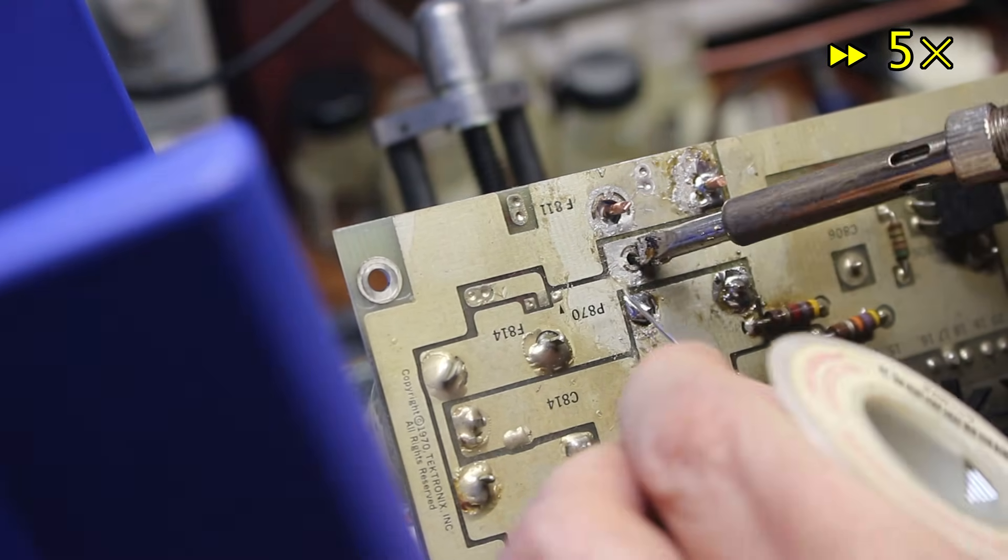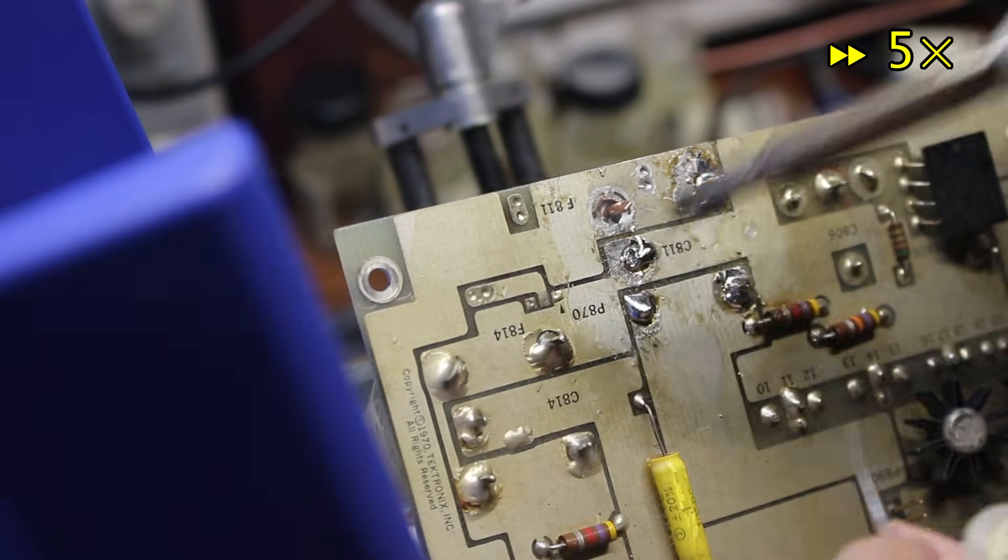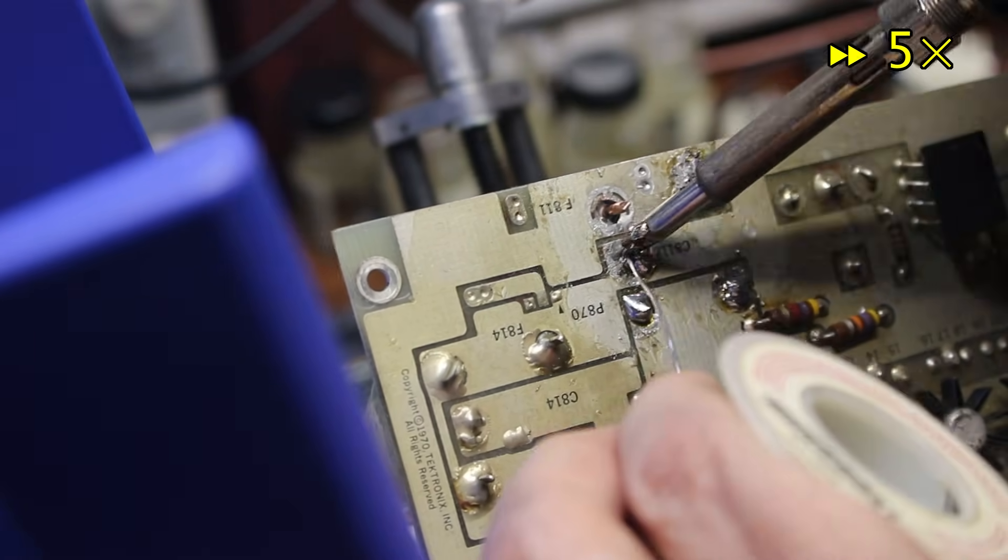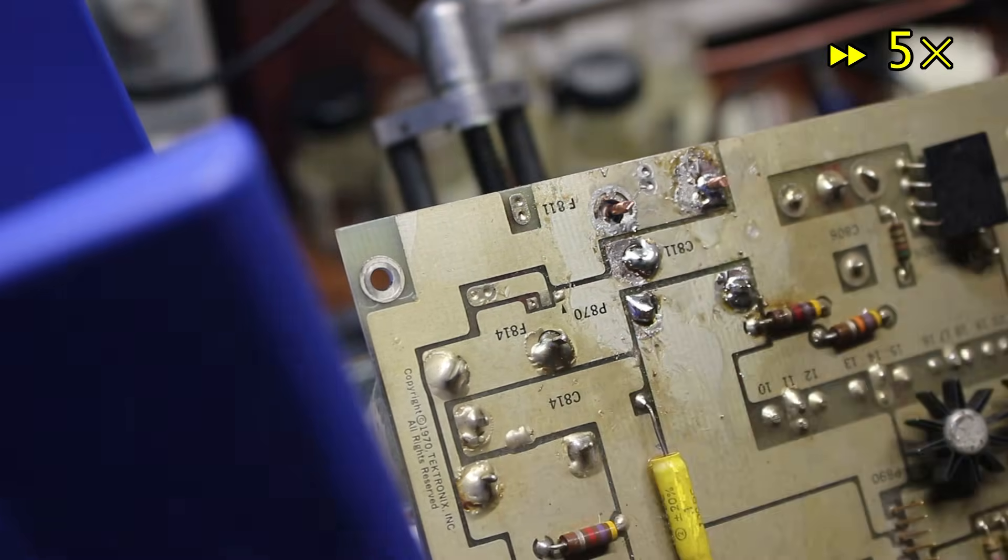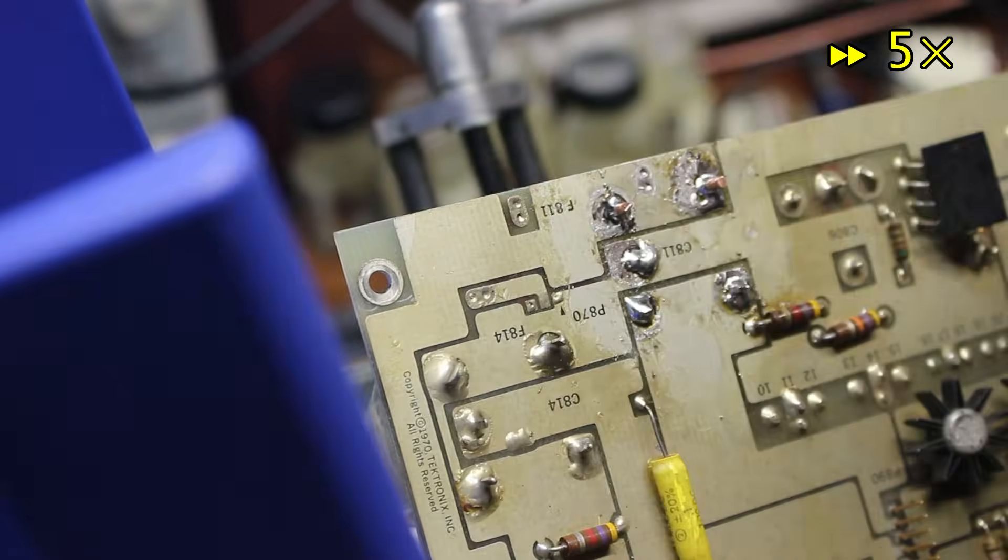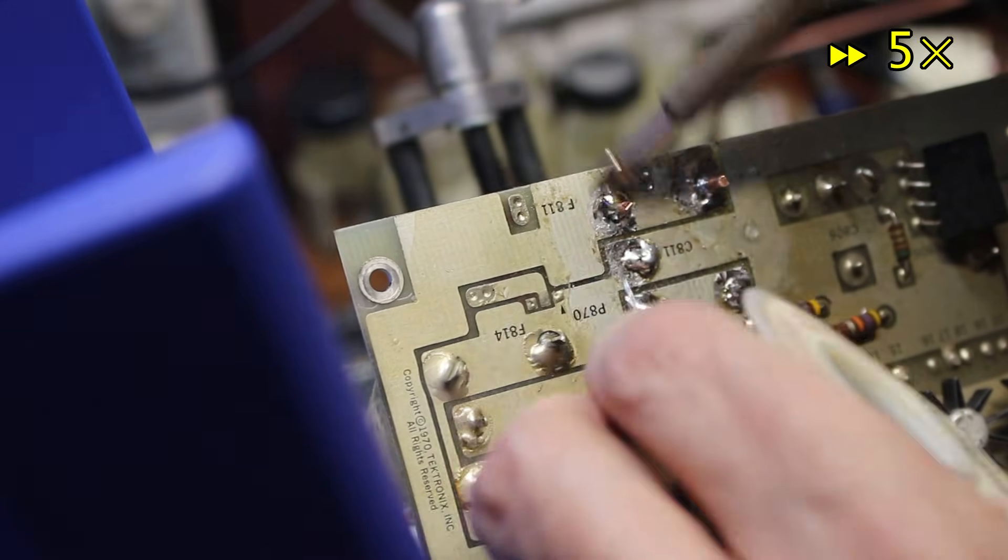Next, off-camera, all the places that I worked on got another bath of isopropyl alcohol to clean up not only the excess flux, but also the penetrant, cutting oil and chips left over from dealing with the frozen mounting screws.